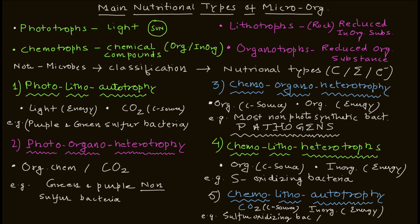We have discussed the important types of microorganisms based on their nutritional requirements: phototropes, chemotropes, lithotropes, and organotropes. Further, we covered photolitho autotrophy, photo organo heterotrophy, chemo organo heterotrophy, chemo litho heterotrophy, and chemo litho autotrophy. Remember that most pathogenic microorganisms fall under chemo organo heterotrophy. Reading further on this topic and making notes will help you in your exams, as these terms can be easy to forget.